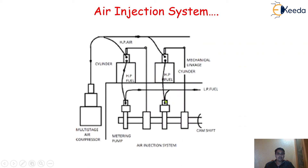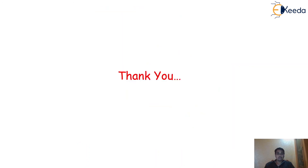So to summarize: the low pressurized fuel is initially converted from low pressure to high pressure and sent to the engine cylinder. At the same time, the high pressurized air from the multi-stage compressor is sent into the engine cylinder. The valve opens because of the camshaft rotation, and both the high pressurized air and the high pressurized fuel are injected inside the engine cylinder — that is why it is called the air injection system. I hope you understood the air injection system properly. Thank you so much for watching this video.